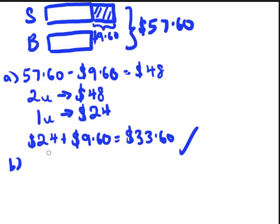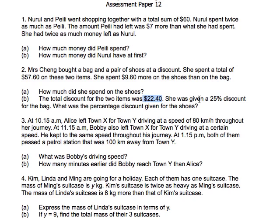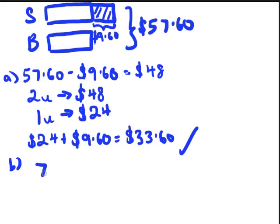And then we minus it off from the original amount of discount which is $22.40. So first off, I am actually going to find out what is the discount given. She was given a 25% discount for the bag. Which means that right now, she's only paying 75% of the price. Am I right?